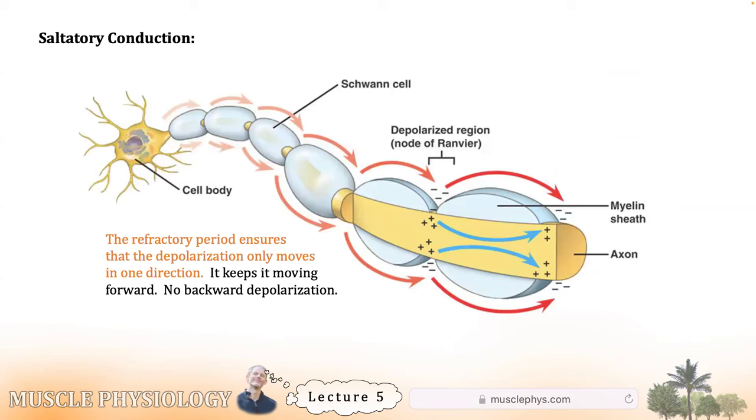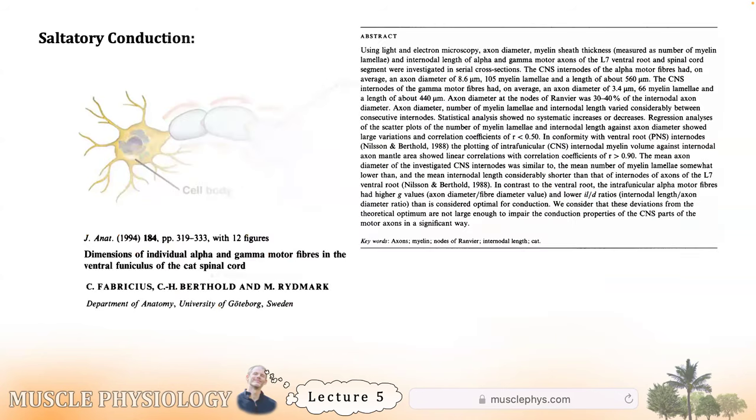Now, Schwann cells are what form the myelin. Each Schwann cell covers about 100 or so micrometers of an axon. So a long nerve will have thousands of these. And there are lots of conditions that are going to impair Schwann cells, including leprosy. And these conditions will affect nerve transmission because myelin is critical to conduction velocity.